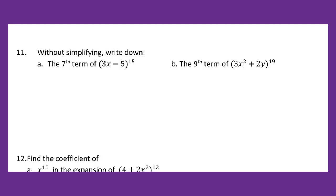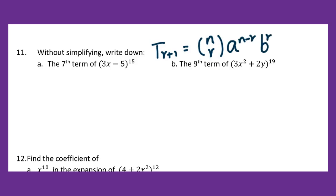We know that for the r plus 1th term, this is the formula: n taken r, a to the n minus r power and b to the r power. Therefore, for the 7th term — that means we're looking for t7 — r equals 7 minus 1, which equals 6.